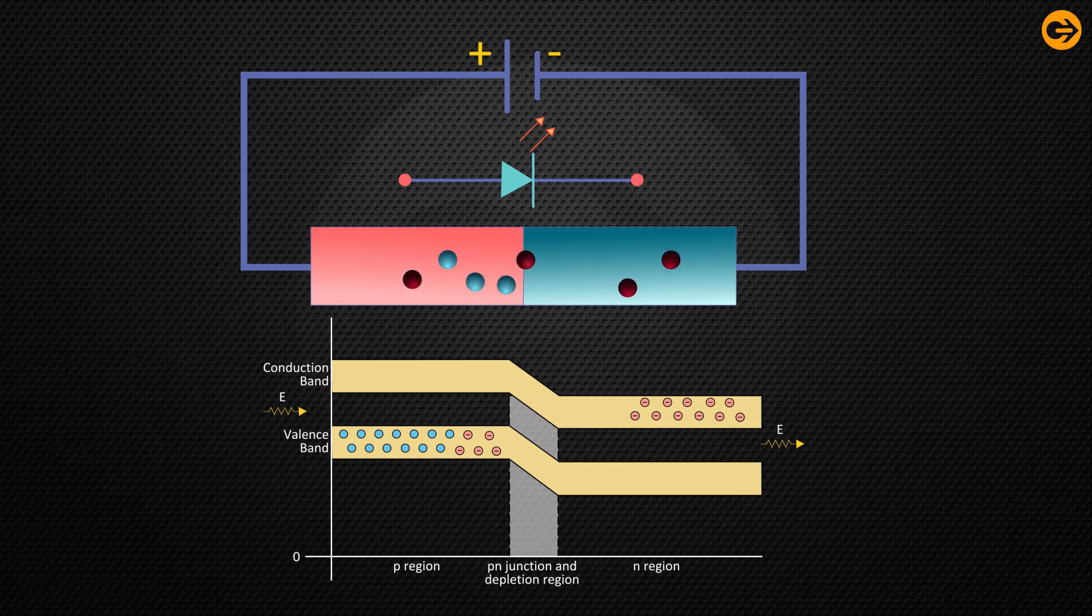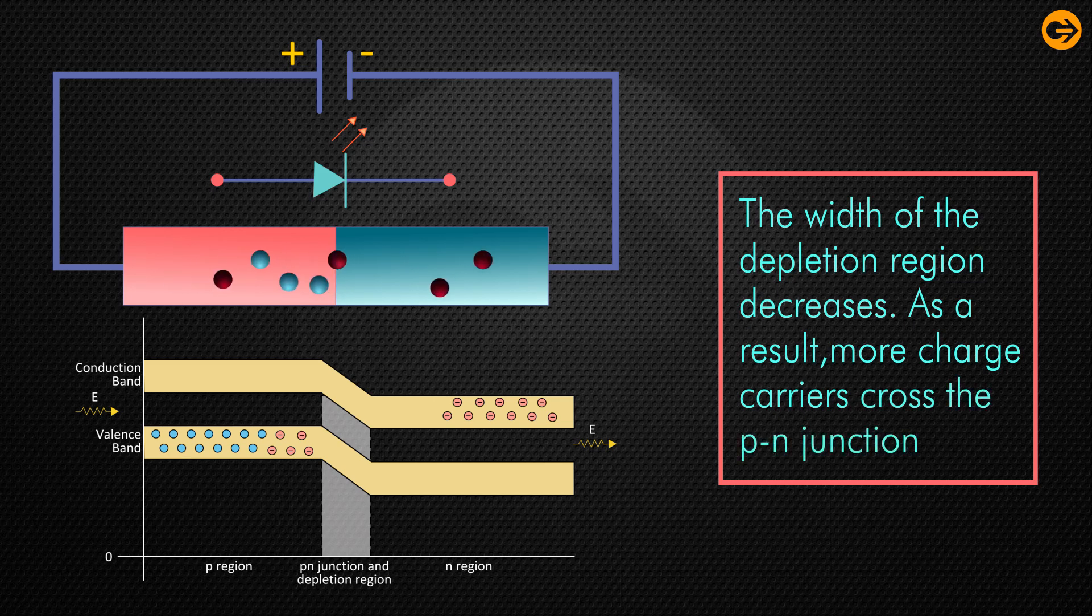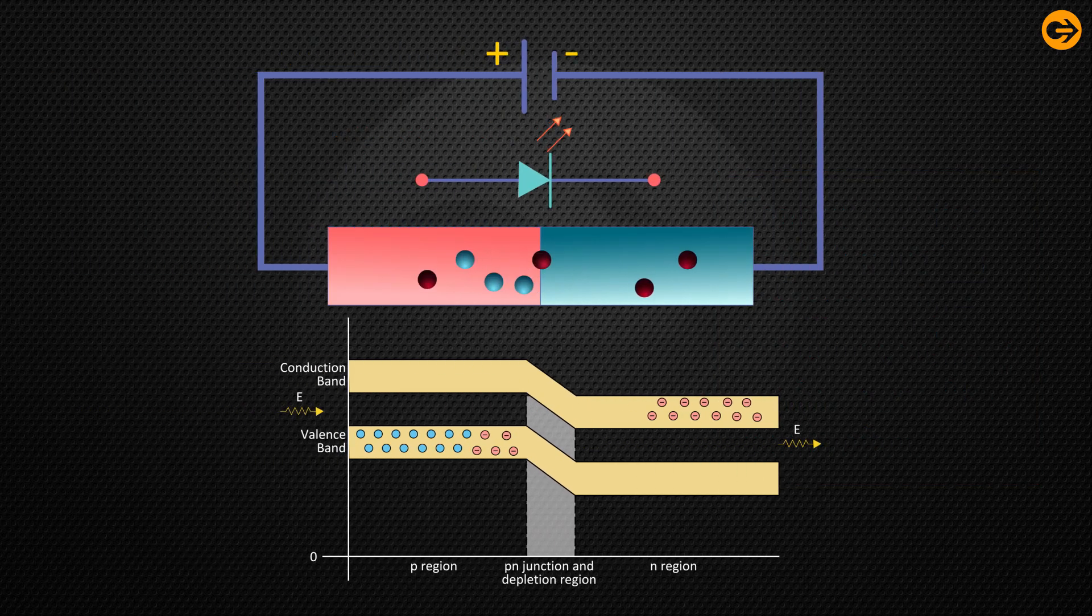As a result, more charge carriers cross the PN junction. Some of the charge carriers from the p-side and n-side cross the PN junction before they recombine in the depletion region. The recombination takes place in the depletion region as well as in the p-type and n-type semiconductors.